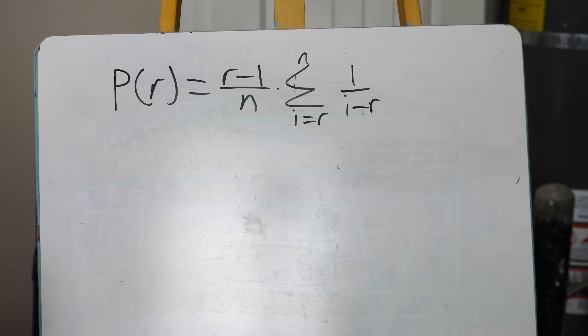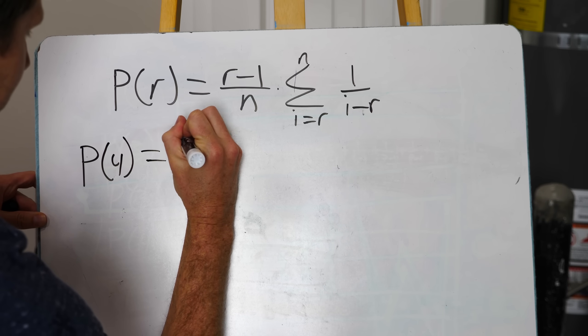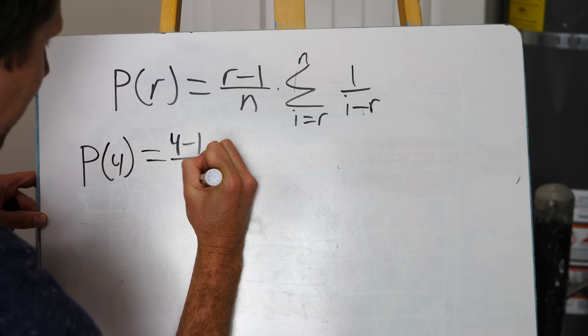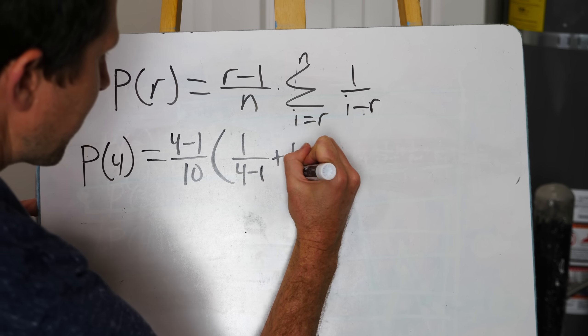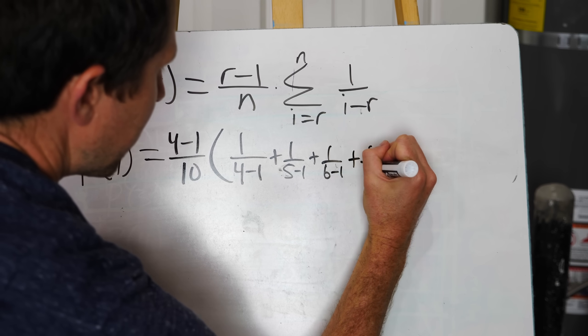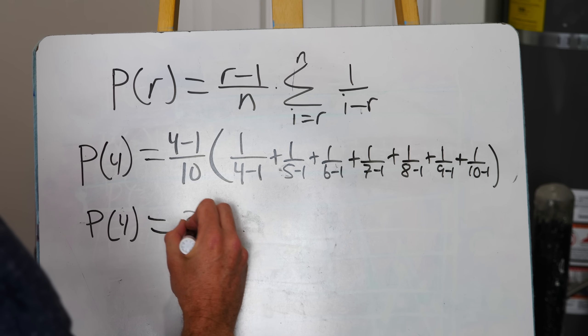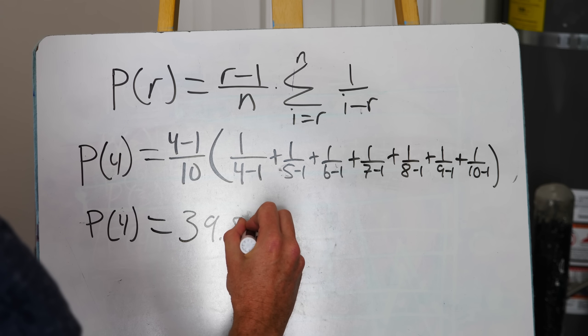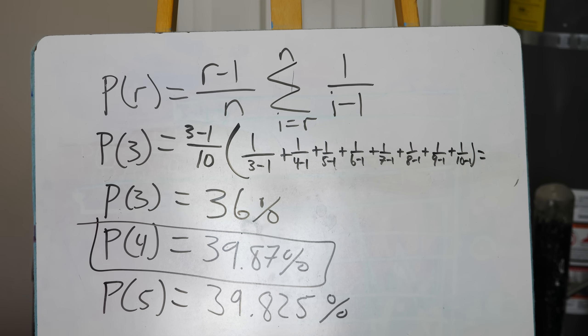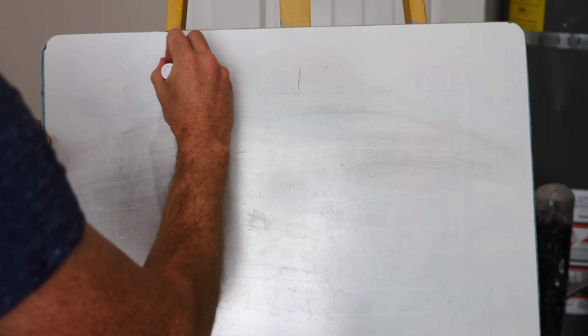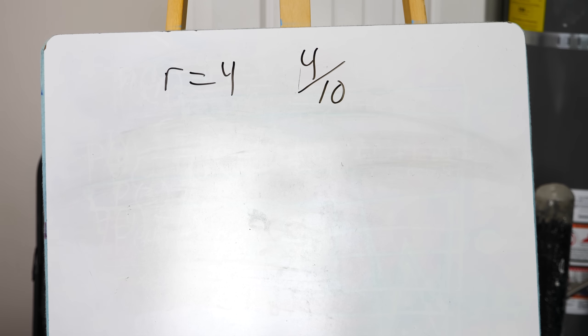So you maximize the probability and it turns out if you have R equal to 4, then you get (4-1)/10 times sum from i=r to i=r of 1/i, which gives you a probability of 39.87% chance of success. All the other numbers give you a lower number than this. So in that equation, we found that R equals 4, which meant that we should reject the first 4 out of 10 people that we dated.